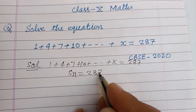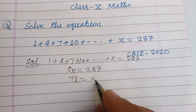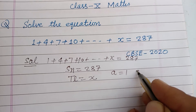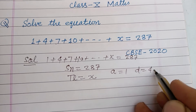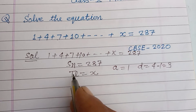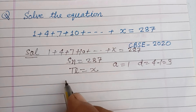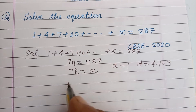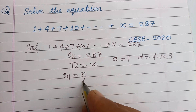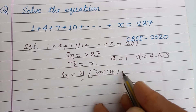So here SN is given to us as 287, the last term TL is x, the first term a is 1, and d equals 4 minus 1, that is 3. So the sum of n terms is to be applied.